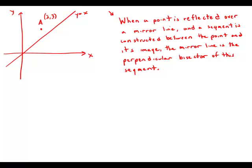the mirror line is the perpendicular bisector of this segment. So what that means is if we're ever told that a line is a perpendicular bisector of a segment, it immediately means that one endpoint of the segment is a reflection of the other endpoint.